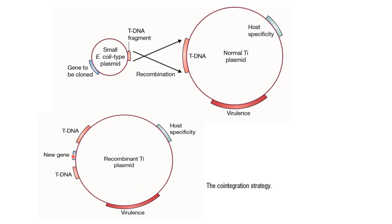So two techniques can be used for the modification of the Ti plasmid: the binary vector system and the co-integration system. In the binary system, two vectors are used — one transfers and the other helps. In co-integration, a small plasmid recombines with the large Ti plasmid, making it a recombinant Ti plasmid.